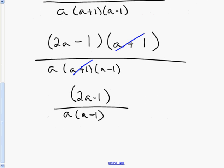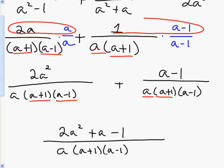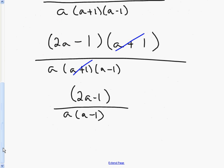The steps never change: find the LCM, multiply each fraction by what you're missing to build them to the same denominator, multiply your numerators respectively when building, then add them together. That's the first example, and I want to do one more to illustrate the same concepts and give you two good examples to go by.